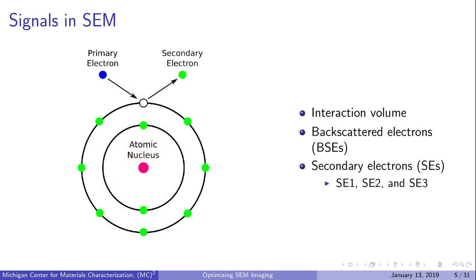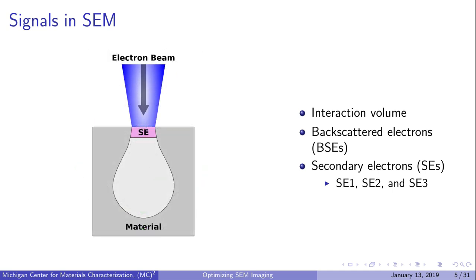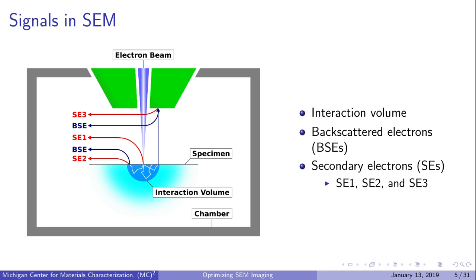Secondary electrons (SEs) are valence electrons that have been knocked out by the incident beam. They have relatively low energies. While SEs are generated throughout the interaction volume, they can only escape from close to the sample surface, typically within a few nanometers, because of their low energies. There are three types of secondary electrons: SE1, SE2, and SE3. SE1s are generated by the beam at the point of impact. SE2s are generated by scattered electrons further from the point of impact. SE3s are generated by backscattered electrons when they hit other parts of the SEM, such as the objective lens or chamber wall, after they exit the sample. SE1s and SE2s are generated in the sample, while SE3s are not.